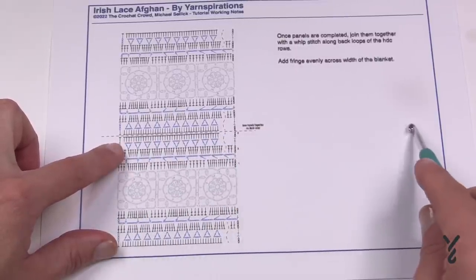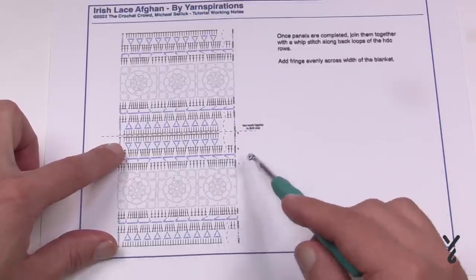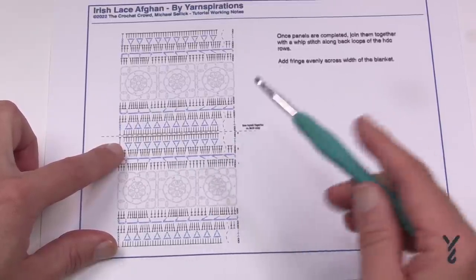You'll whip stitch the half double crochets together right at this particular spot and you'll go all the way across all the way down to the other side. So you'll put all of your seven panels together in that format and therefore it'll all look just like this.